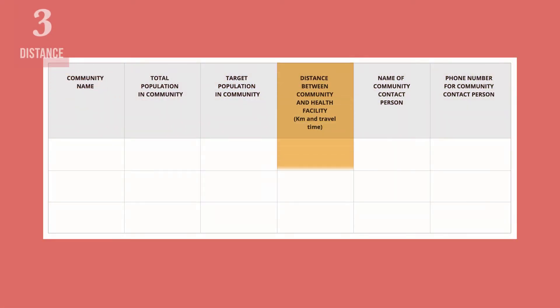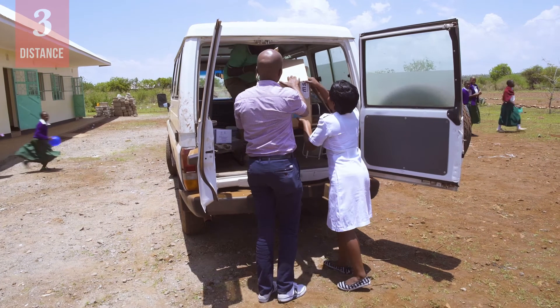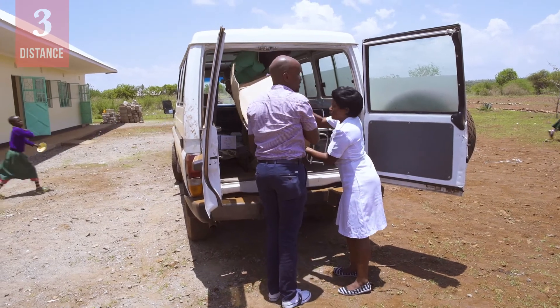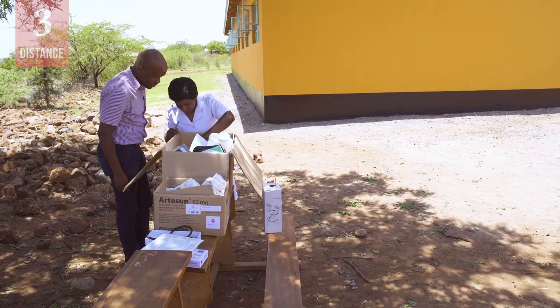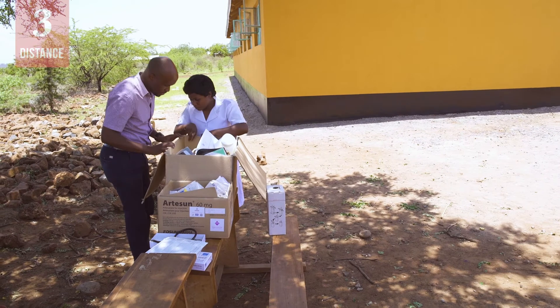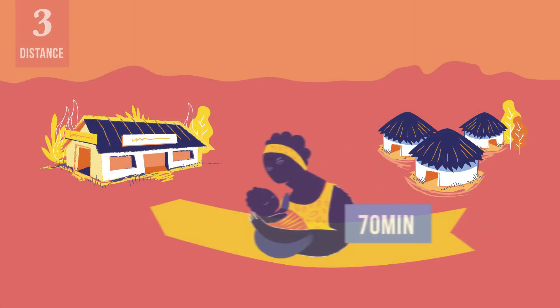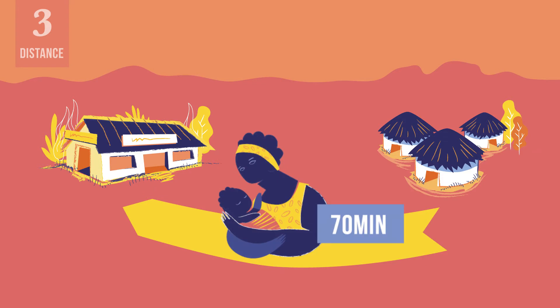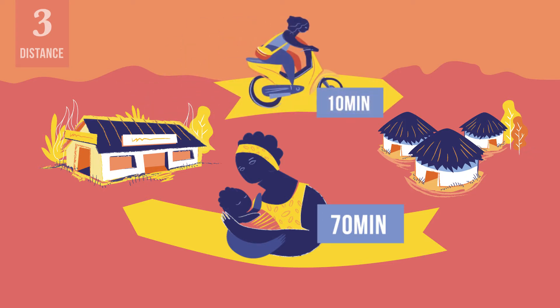How long does it take to reach this community, and what mode of transportation will you use to get there? Travel time determines whether you will reach a community through fixed sessions or outreach sessions. For example, if it takes more than an hour for a caregiver to walk to your health facility, but you could reach that caregiver's community in 10 minutes by motorcycle, then you should plan an outreach session for the people in that community.